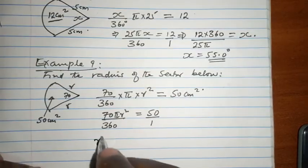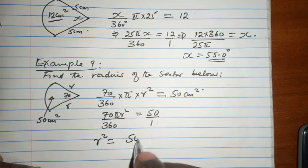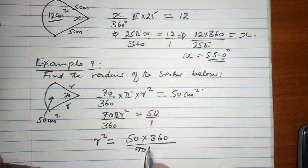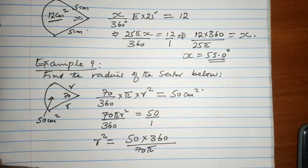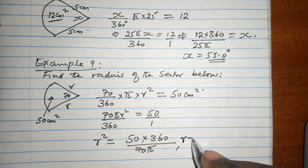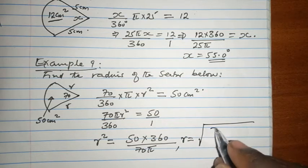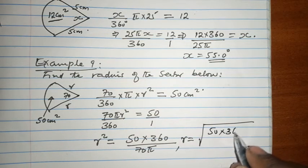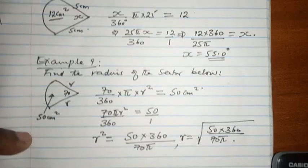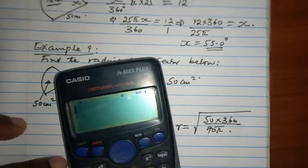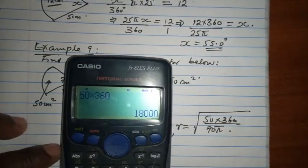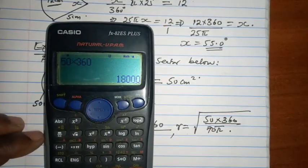When we cross-multiply and make r squared the subject of the formula, it equals 50 times 360 all over 70 pi. If you want to get the radius, the radius itself is the square root of 50 times 360 all over 70 pi. 50 times 360 gives 18,000.